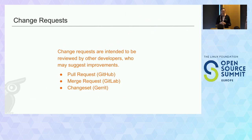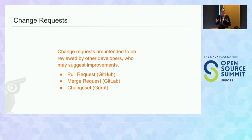The third category of metrics is around change requests. We've looked at contributors, contributions, and organizational diversity — who is doing the work. Now let's look at how the work is actually done. Many of us use platforms like GitHub, GitLab, or Gerrit where we have change requests. In the CHAOSS community, we use 'change requests' as a vendor-neutral synonym for pull requests, merge requests, or change sets. The idea is that contributions are made and community members request reviews before changes make it into the main branch.